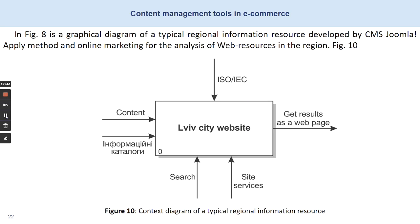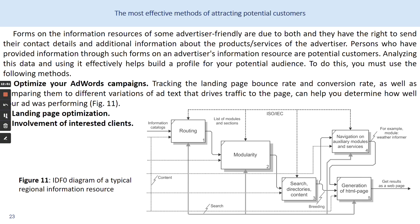In this slide you can see a context diagram of a typical regional information resource. Forms of the information resources of some advertiser-friendly sites allow users to send their contact details and additional information about products, services, or the advertiser. Persons who have provided information through such forms of an advertiser's information resource are potential customers. Analyzing this data effectively helps build a profile for your potential audience.